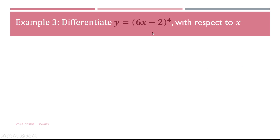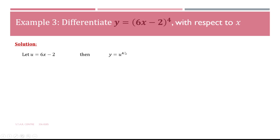Example 3: differentiate y equals (6x minus 2) to the power of 4. This is simple to differentiate without the chain rule, as it is of the form ax plus b to the power of n. However, it can also be differentiated using the chain rule by making a substitution. Let u equal the bracket: u equals 6x minus 2, so y becomes y equals u to the power of 4.